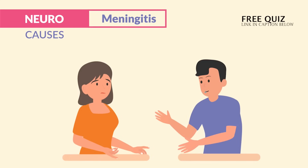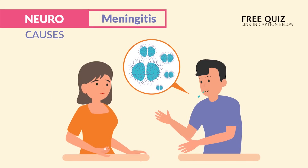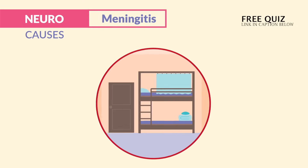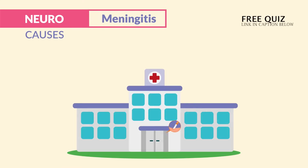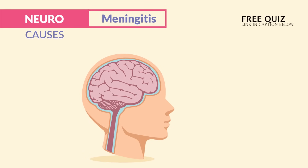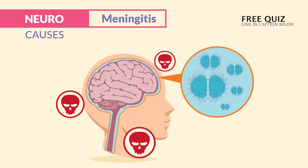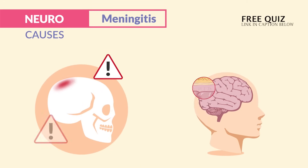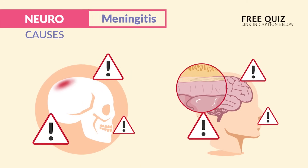It spreads by being exposed to another infectious person. It's very common in college dorm rooms where there are tight quarters, or even in hospitals like after surgery. Either way, it invades the CSF — that cerebrospinal fluid — within the subarachnoid space, causing major swelling and inflammation.